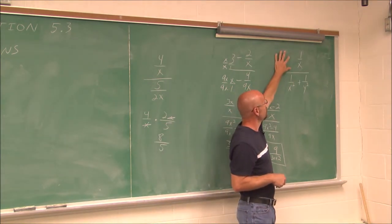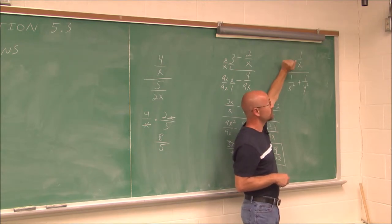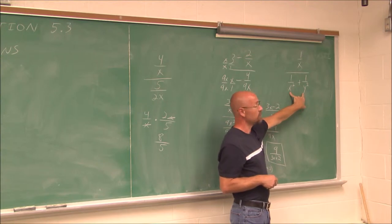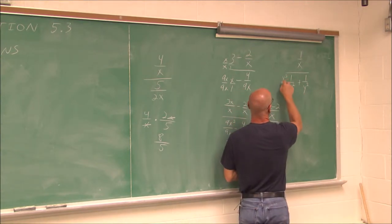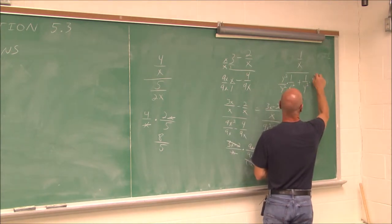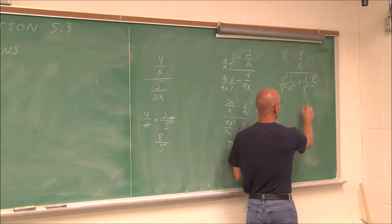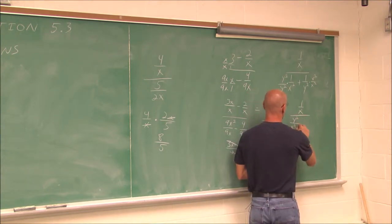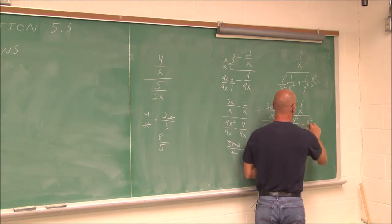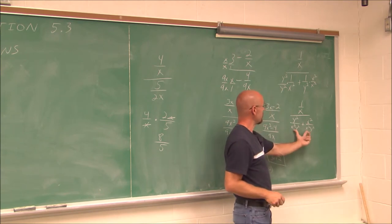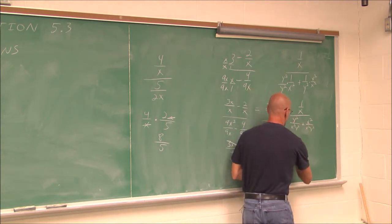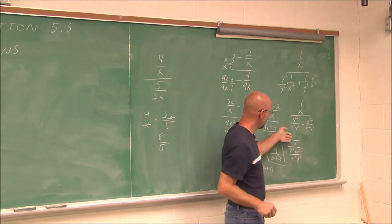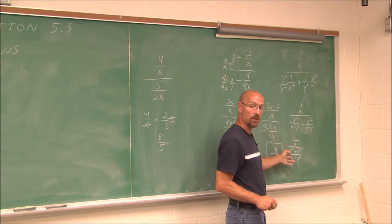Again using method 1, we're going to combine the numerator to a single fraction — in this case, that's already done. Then combine the denominator to a single fraction. We need to find the common denominator, which is x²y². This term would need a y² over y², and this term would need an x² over x². The denominator simplifies to (y² over x²y²) plus (x² over x²y²), giving (y² plus x²) over x²y².